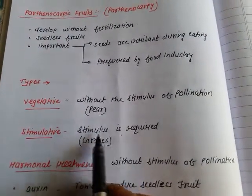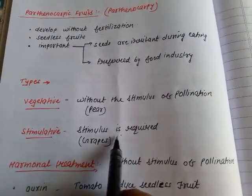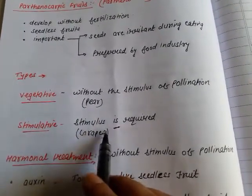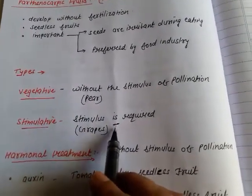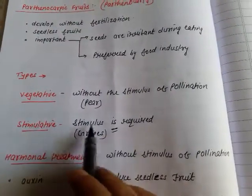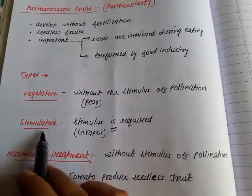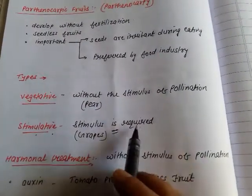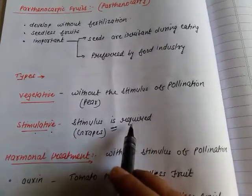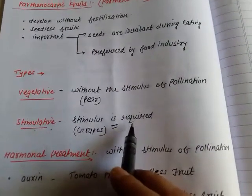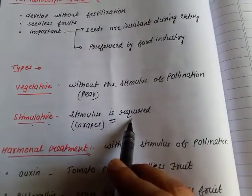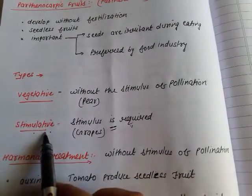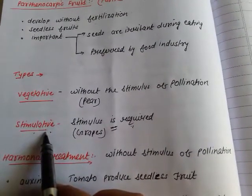In stimulative parthenocarpy, these fruits are also seedless — even though pollination occurs, they remain seedless because it is still parthenocarpy. After pollination, fertilization does not occur, so seeds are not formed. So these are the two types: vegetative and stimulative parthenocarpy.